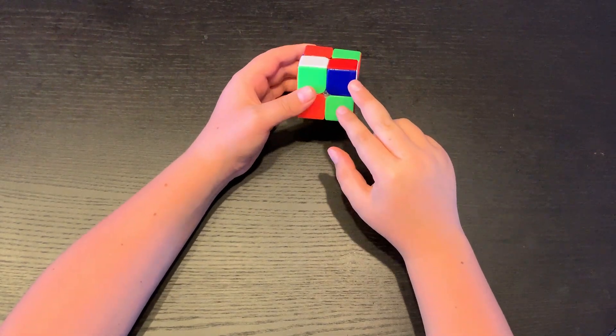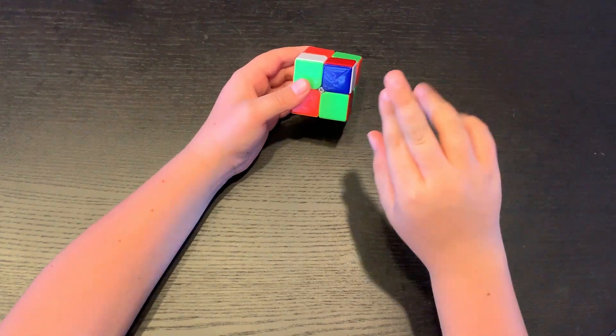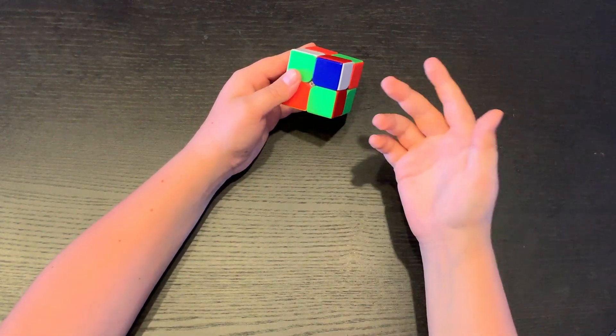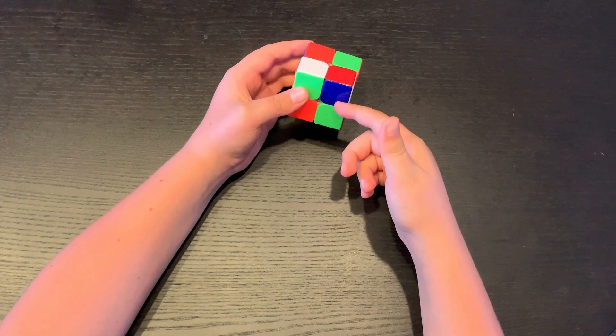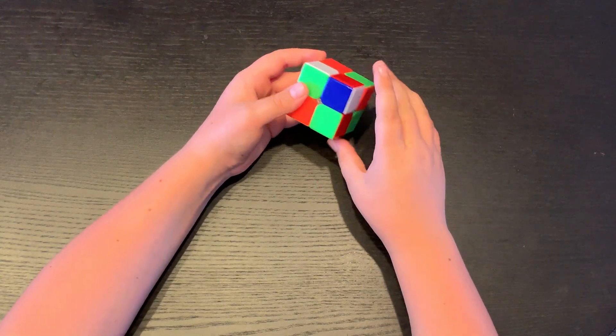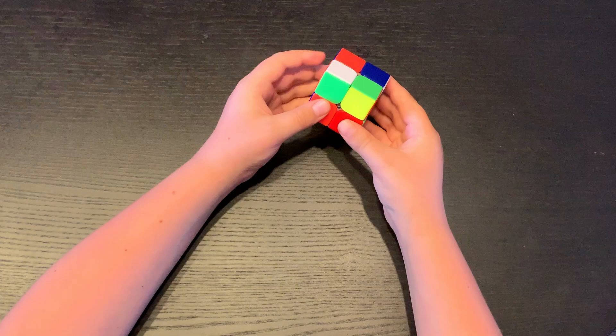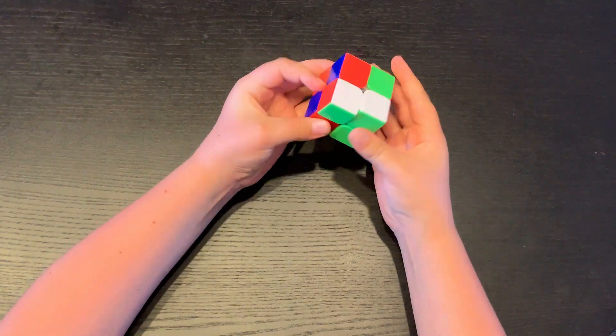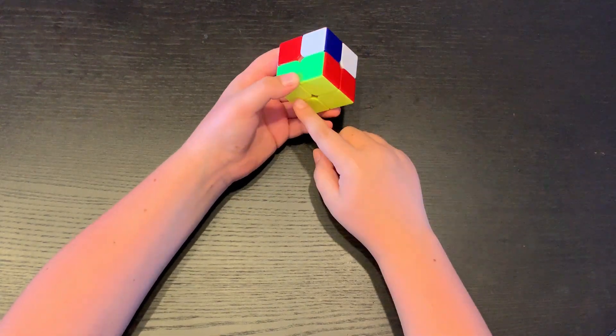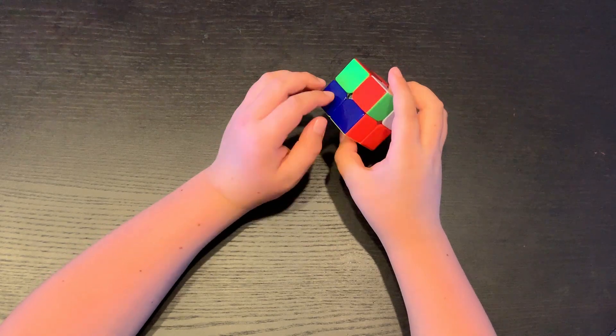If you don't know what an F2L is, it's the first two layers on a 3x3. So you make these edge-corner pairs on a 3x3, but on a 2x2 you don't have an edge, so you just make corner pairs. And this is how you do it.